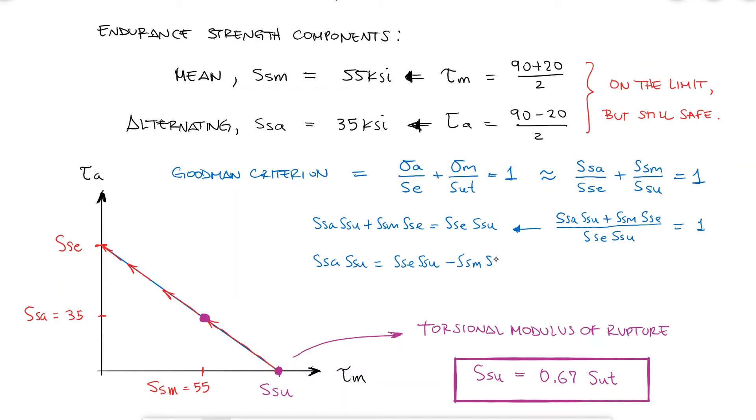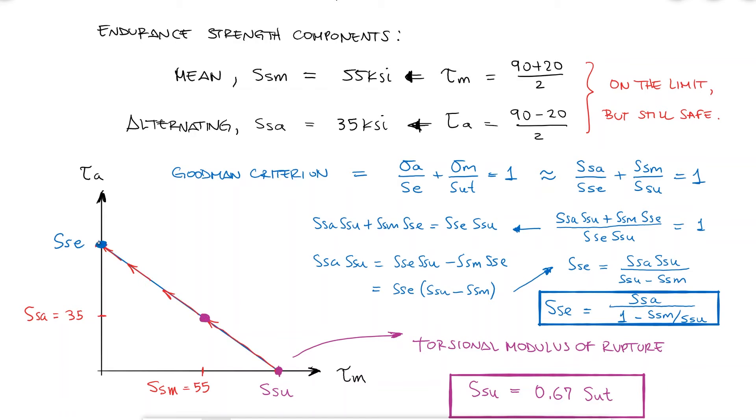Solving for SSE gives us an expression for the shearing endurance limit as a function of the Zimmerli values, values that won't change regardless of the failure criterion we use, and the torsional modulus of rupture, SSU, which is a function of SUT. And this can be done for any fatigue failure criterion.